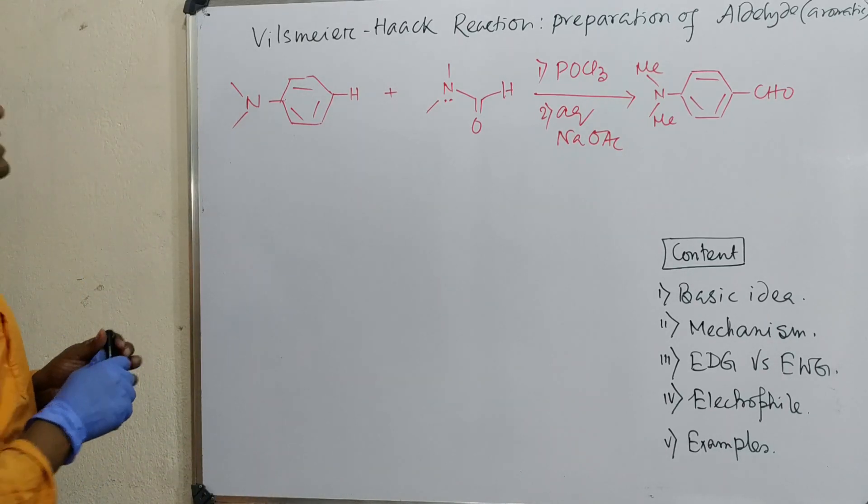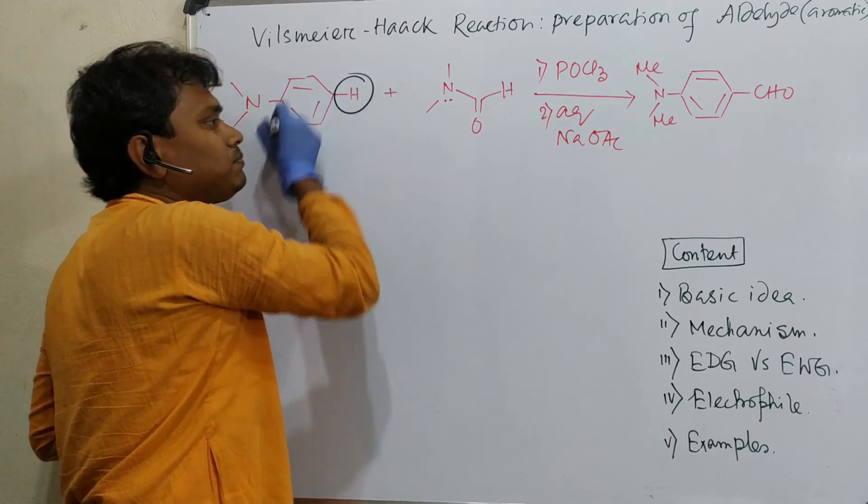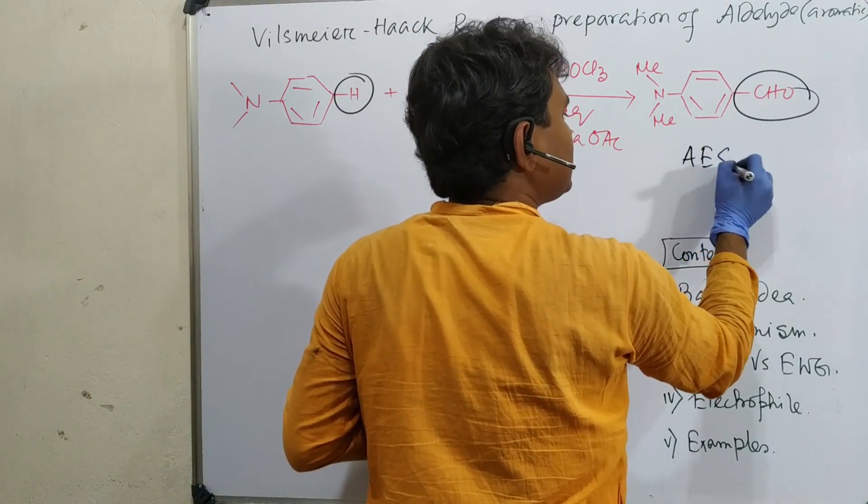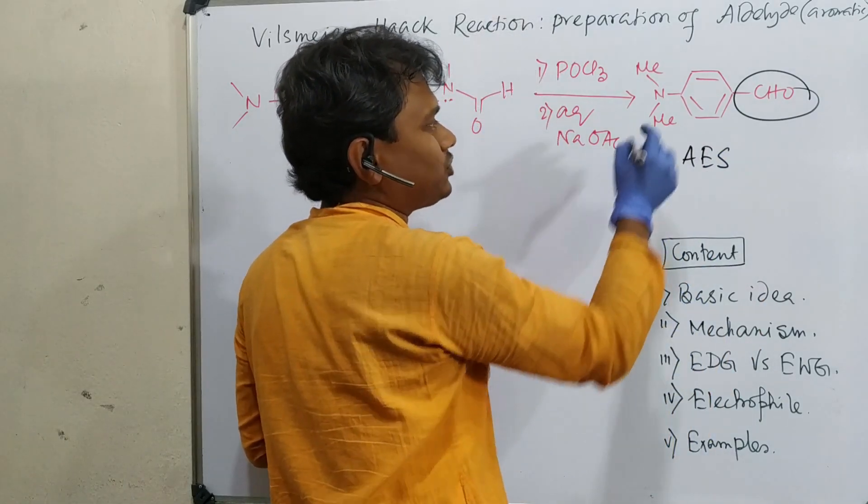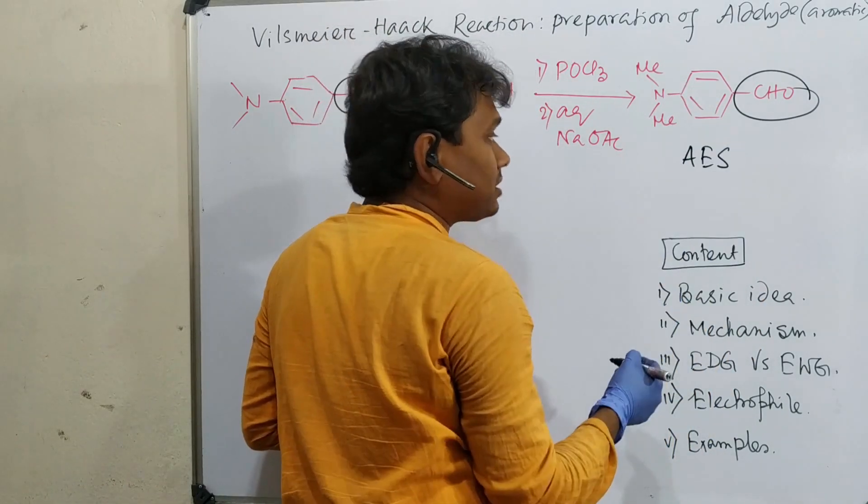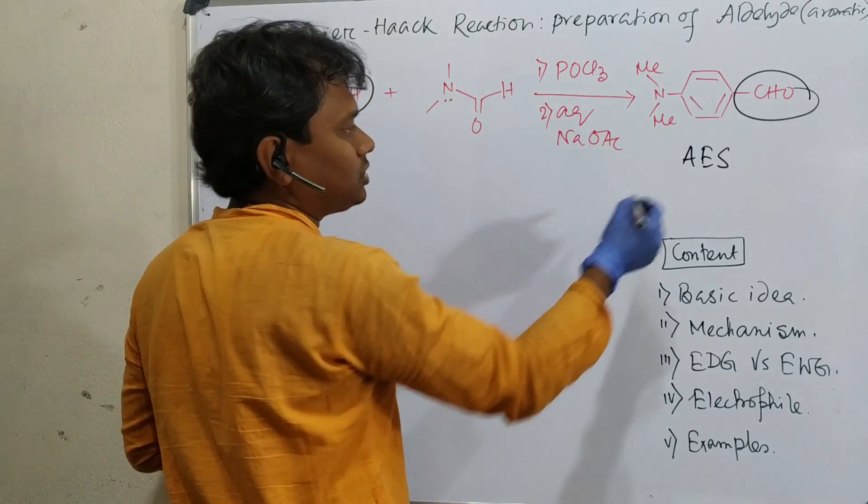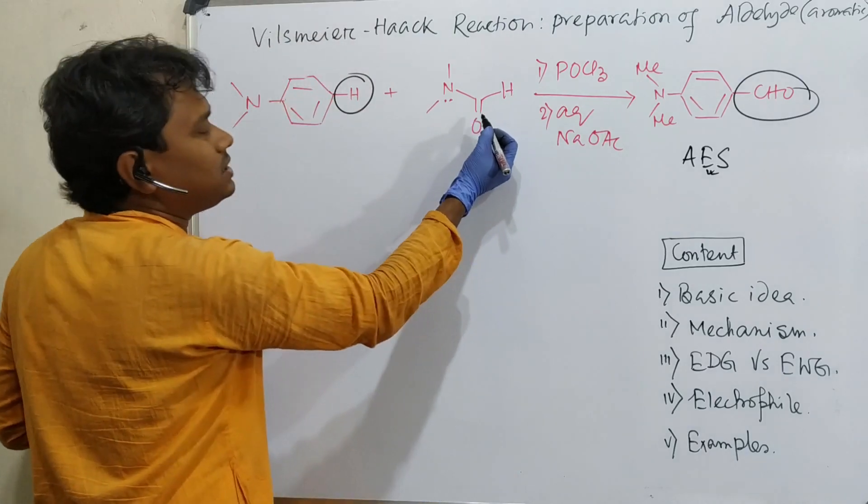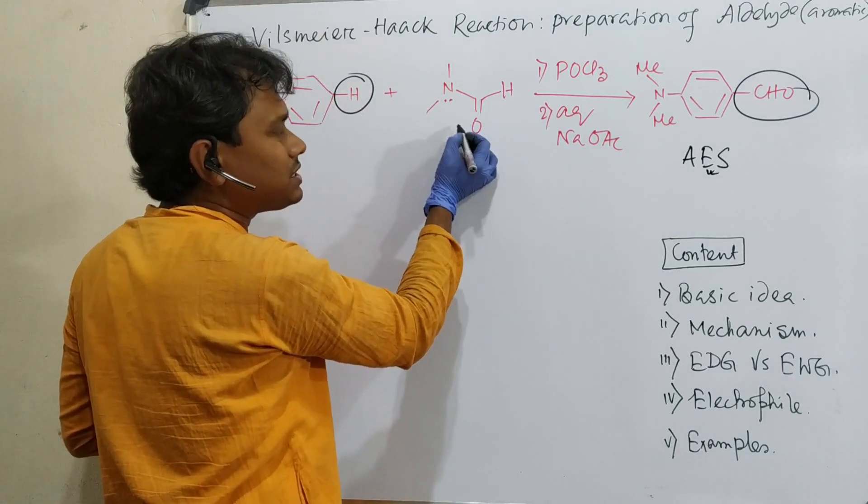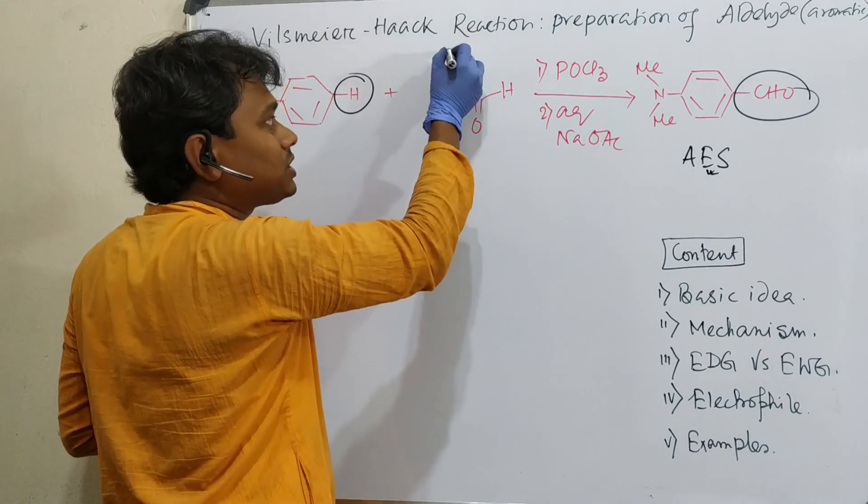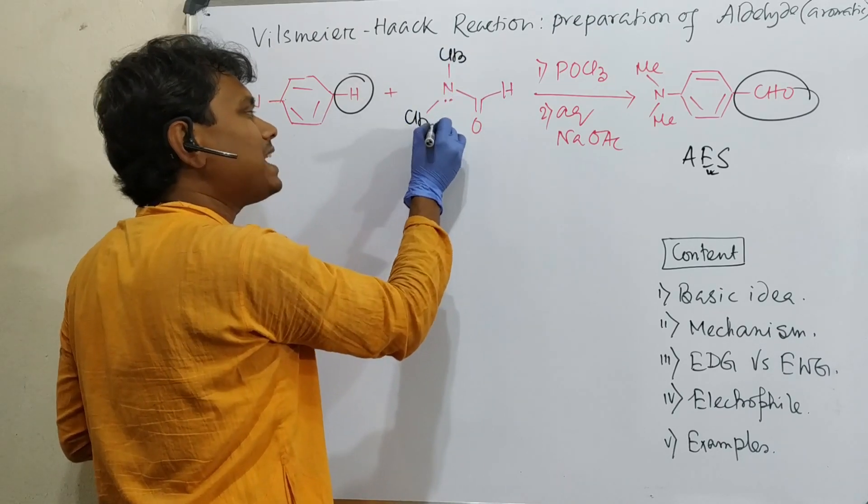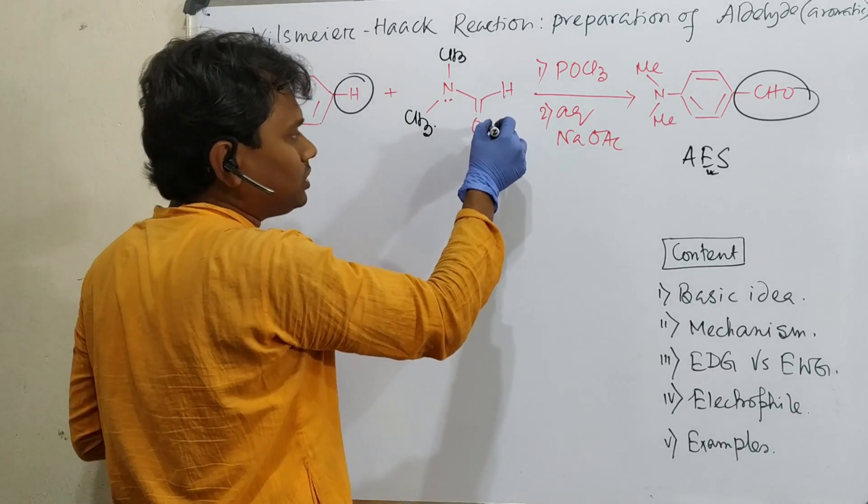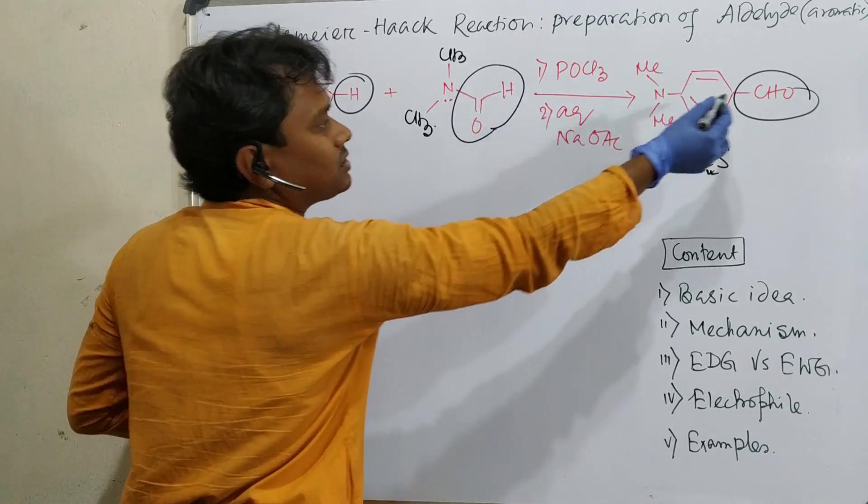The hydrogen at para is replaced by CHO group. That's why this is aromatic electrophilic substitution. This is an electron-rich substrate and the electrophile is generated. What electrophile is generated? This is formamide, actually dimethylformamide.